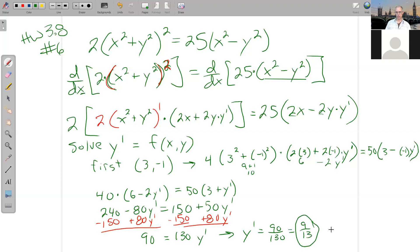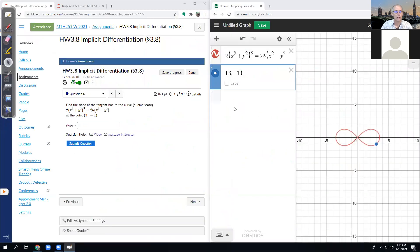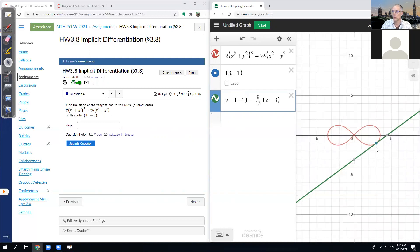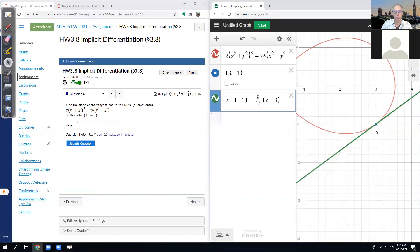So I think that's the slope at 3 negative 1, so I need to plug in and check. So here, if I go y minus y1 equals m 9 thirteenths times x minus x1, yes, got it, that looks like the tangent right there. So that looks pretty good.